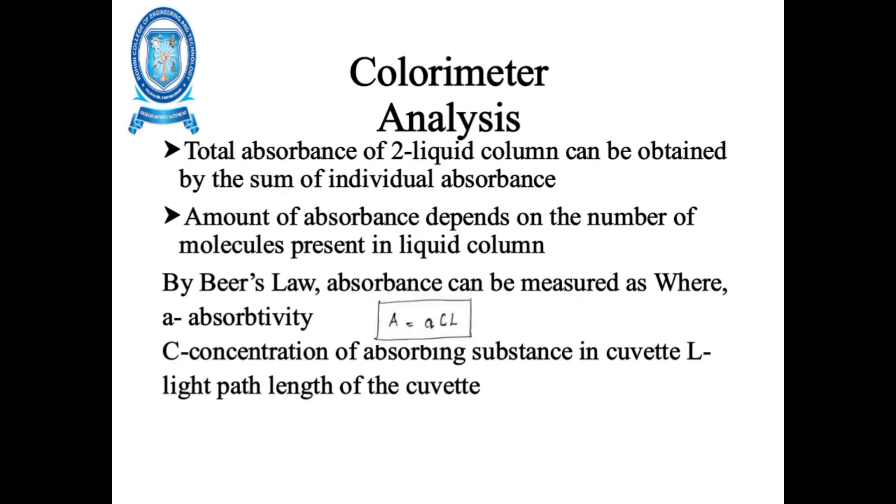Colorimeter analysis: total absorbance of a two-liquid column can be obtained by the sum of individual absorbances. The amount of absorbance depends on the number of molecules present in the liquid column.